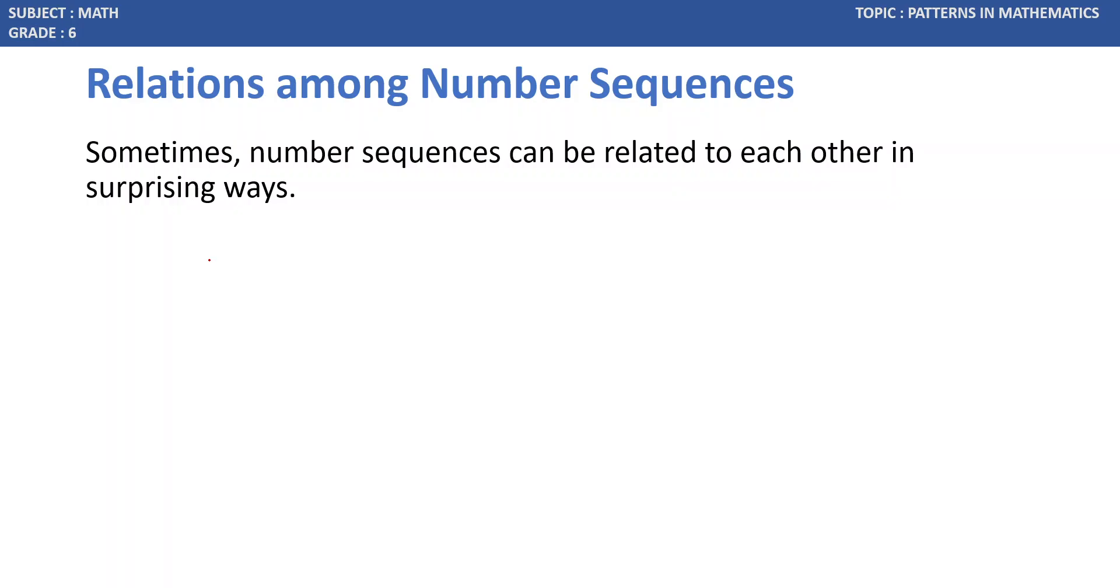For example, as we have seen previously, odd numbers form a sequence: 1, 3, 5, and so on. What happens when we start adding odd numbers?